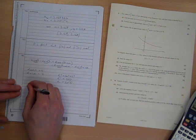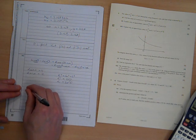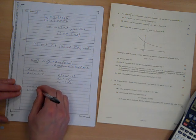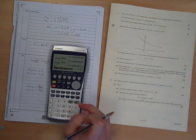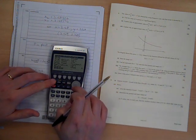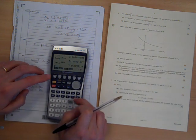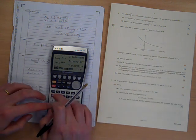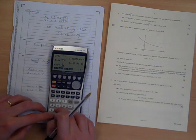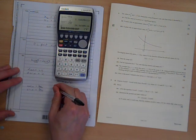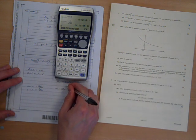So cos alpha is 4 over root 20, sin alpha is 2 over root 20. Either way we do that, we're going to get, hang on, are we in degrees? We're in degrees, so I think my calculator's in radians. So we're going to do inverse cos of 4 over root 20, 26.5. 26.6 degrees.